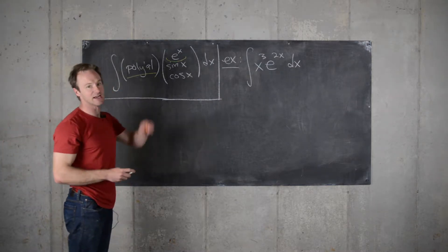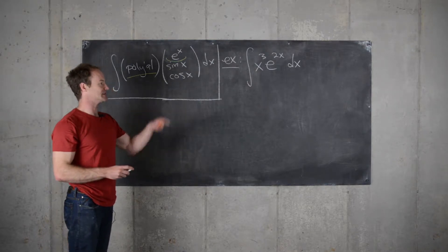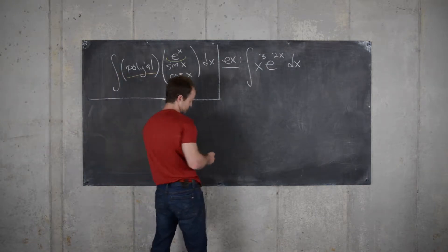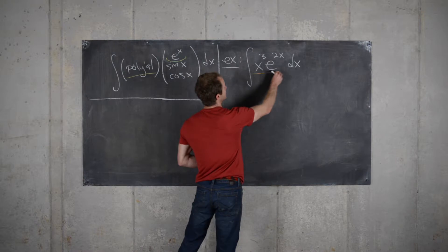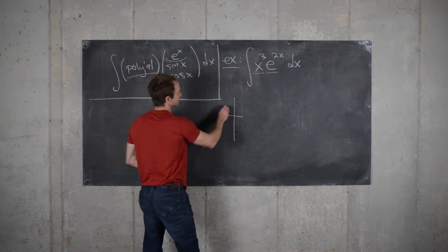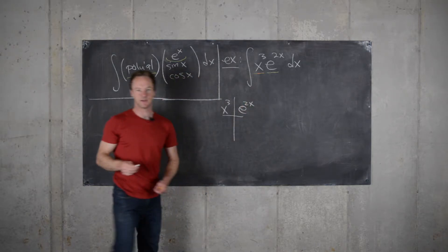The idea is you want to do the integration by parts a few times, but setting up a table will allow you to do that all at once. So the table will go like this. We'll split it up into the polynomial part and the exponential part.